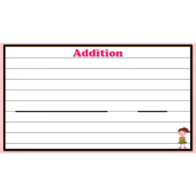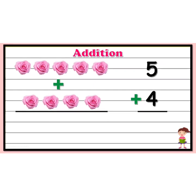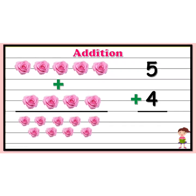Let's take another example and start counting the number of objects: one, two, three, four, five — so we have five roses — plus one, two, three, four, so we have plus four roses. We have to find the total number of roses. Let's count: one, two, three, four, five, six, seven, eight, nine. Totally we have nine roses. So, five plus four gives nine.